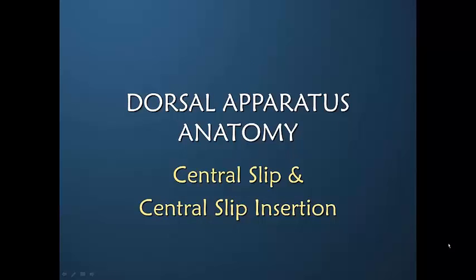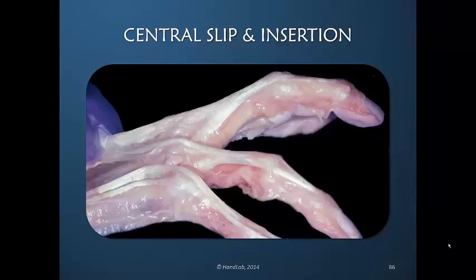We've talked about the central slip and the central slip insertion. If this hand pulled on the extensor digitorum communis and it were primary at the central slip insertion, tension here would indeed extend the PIP joint. But it first has to extend the MP joint, and so there's not always enough left.